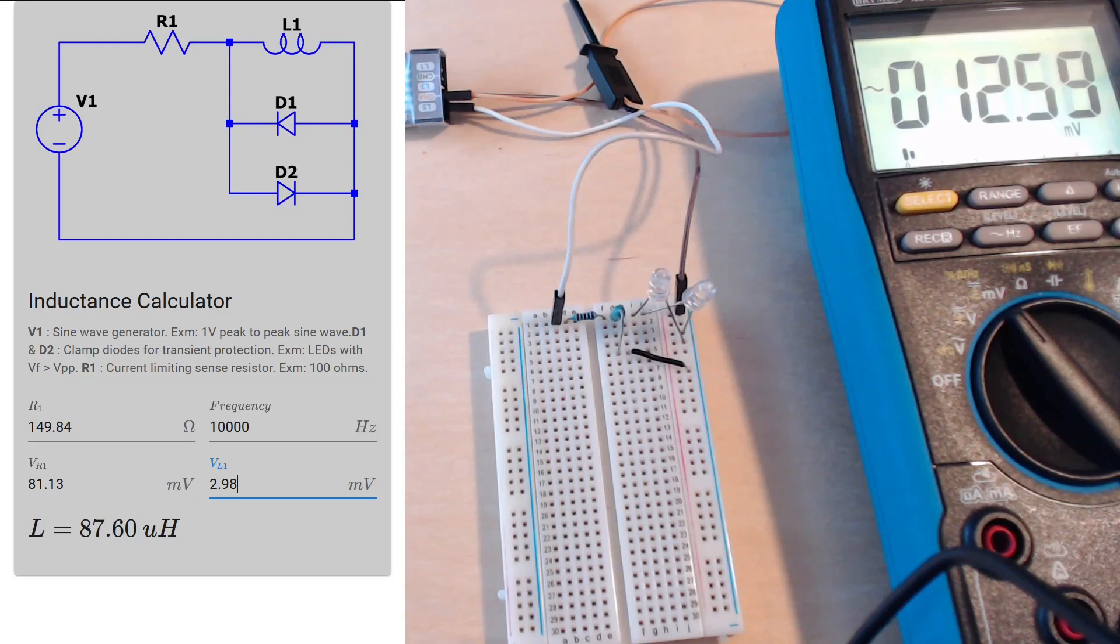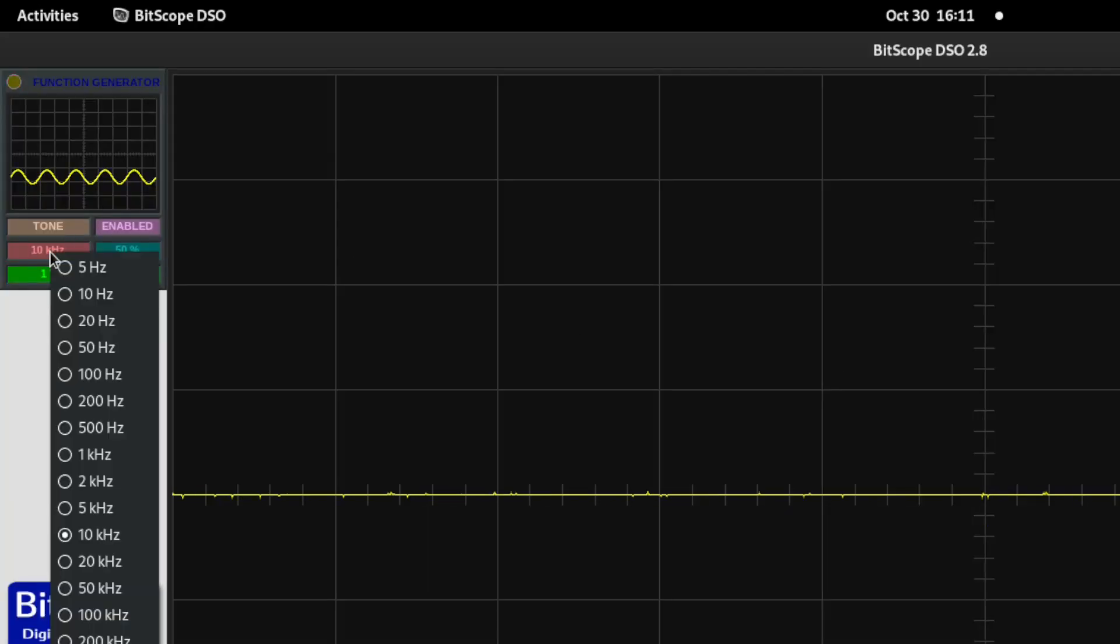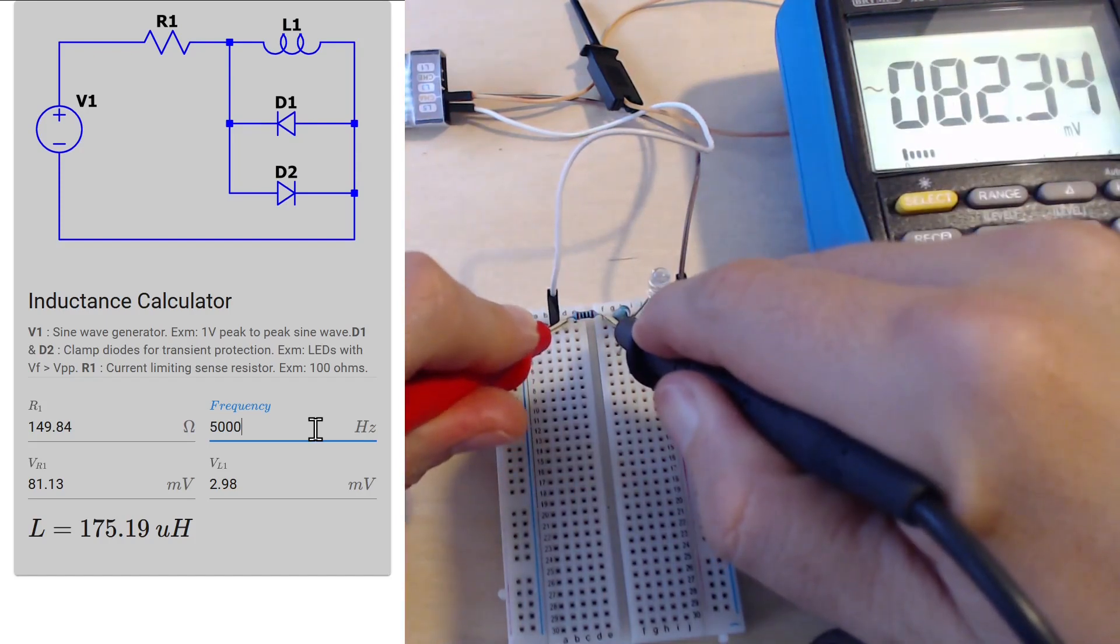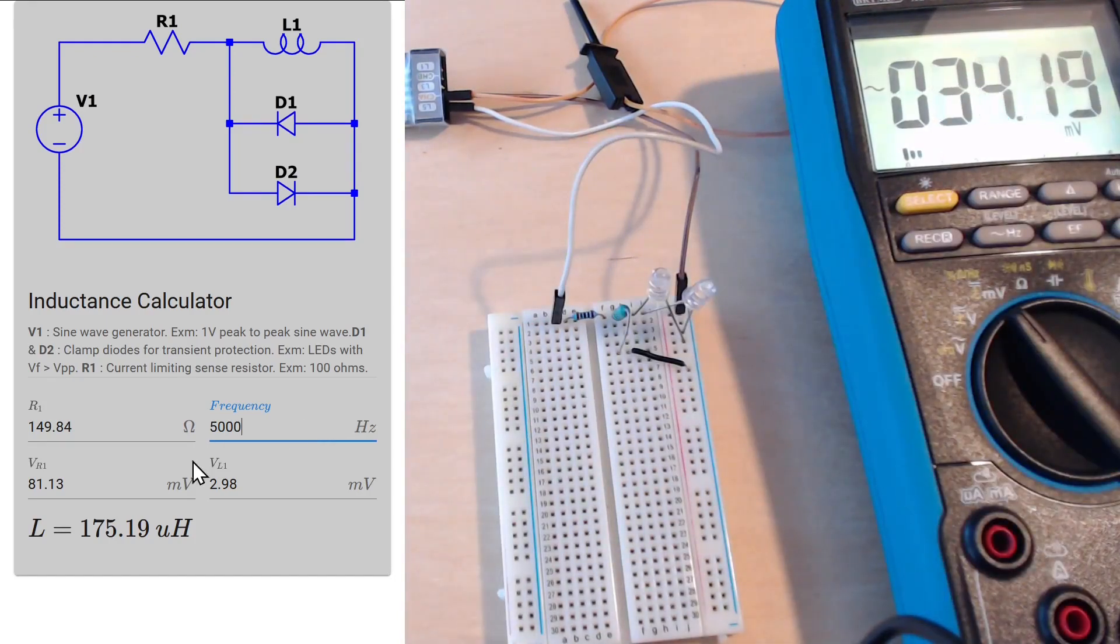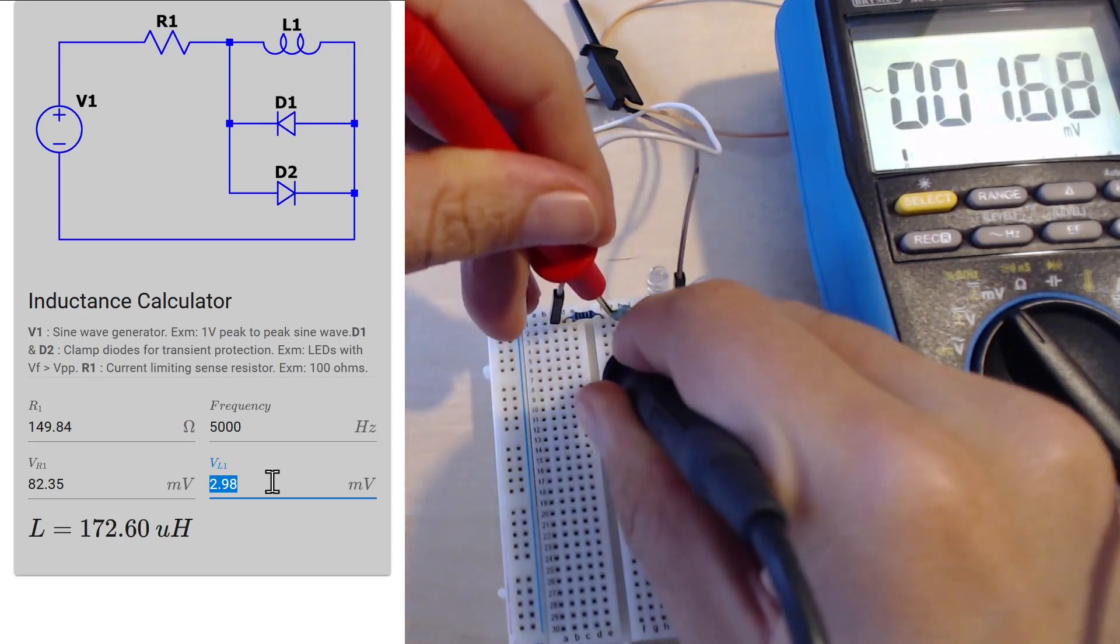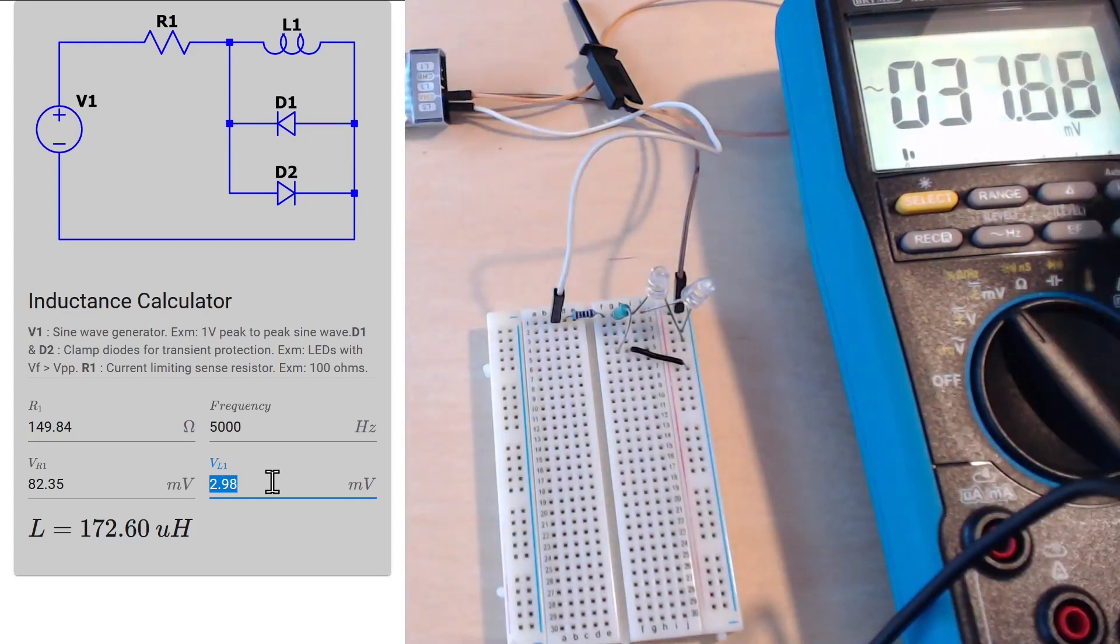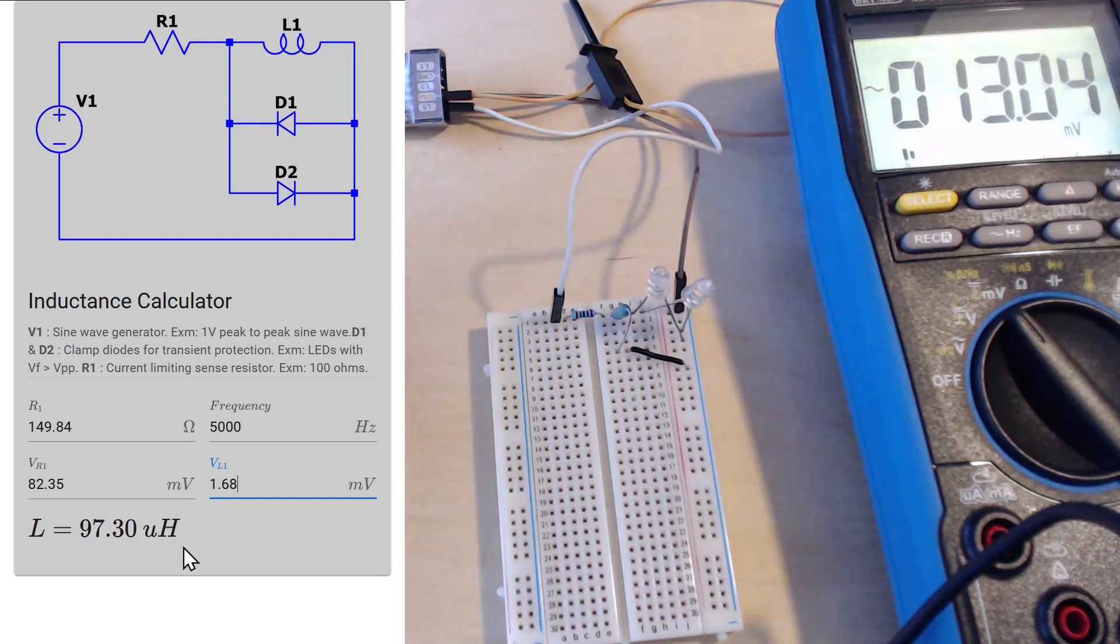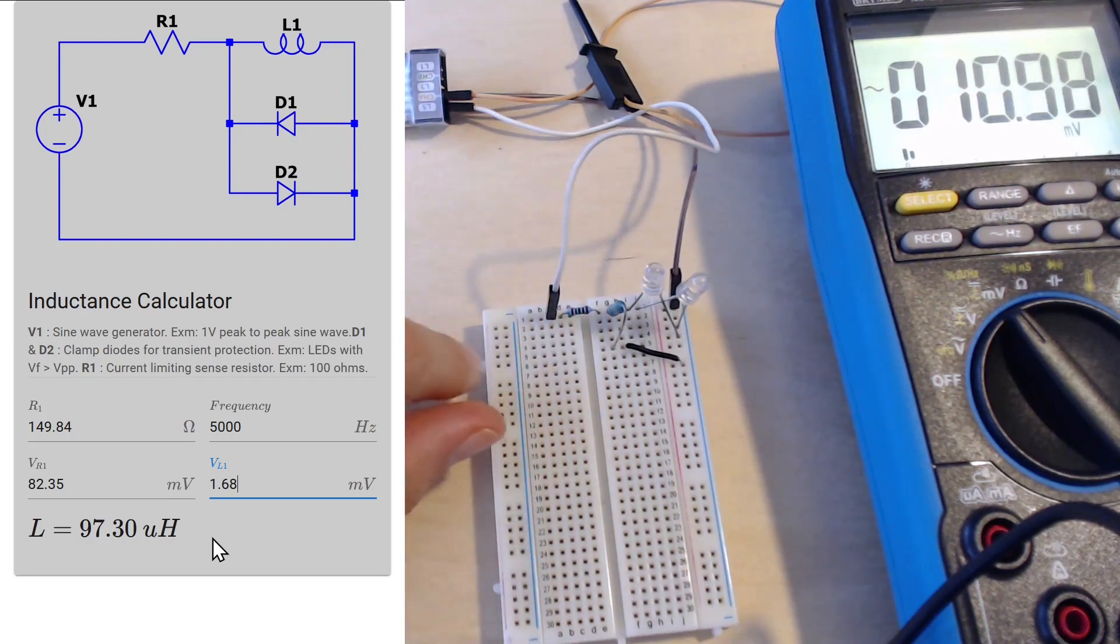Now let's experiment with something - let's try it with a different frequency. I'll just go to my signal generator and change the frequency from 10 kilohertz to 5 kilohertz. I'll change the frequency to 5 kilohertz. And we have to measure the voltages again. Between the resistor first - 82.35. And the next one is our inductor - we have 1.68.